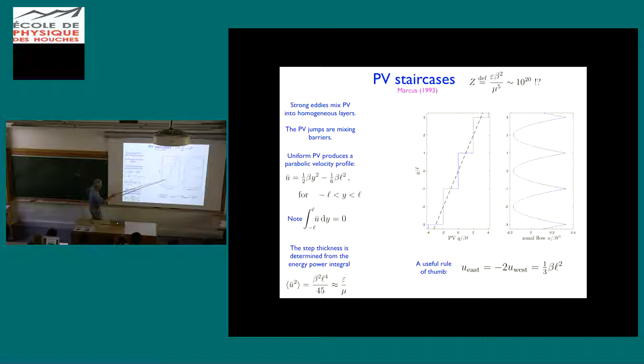Which I've shown here as a regular structure, that is each step of the staircase has the same length, and now recognizing that let's focus on this strip here, and there's an initially unknown parameter here, L, which is the width of the strip. So the strip goes from, in dimensional terms, from minus L to L, and inside that region I'm simply going to solve the equation du dy equals beta y, so that gives me a parabolic velocity profile with uniform PV in that strip, and I construct the parabola so that there's no net momentum in the solution because the forcing is not putting in any momentum, so that's my solution in the first strip, and then it's just periodically extended in a regular fashion to other strips.